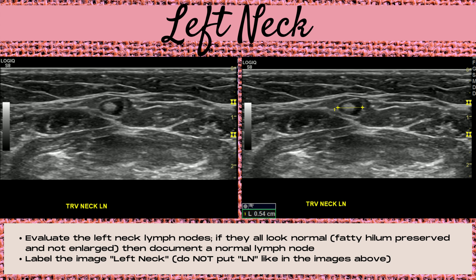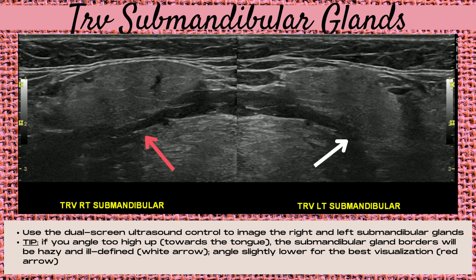Next, move on to the submandibular glands, imaged in the transverse plane. Find them by moving the transducer transversely under the chin and sliding slightly lateral. Use the dual screen control to image the right submandibular gland on one side and the left on the other. Pro tip: if you angle up too high towards the tongue, the submandibular gland borders will be hazy and ill-defined, as shown by the white arrow on the left gland. If you angle slightly lower, you get the best visualization of the borders, as shown by the red arrow on the right gland.